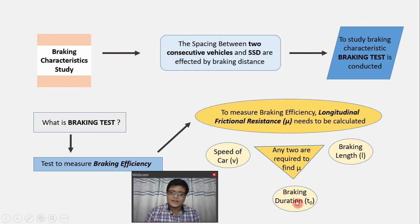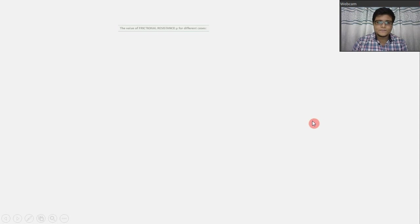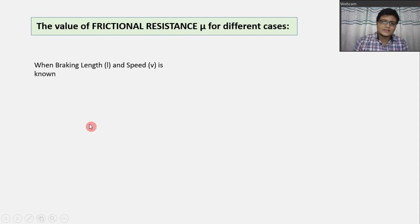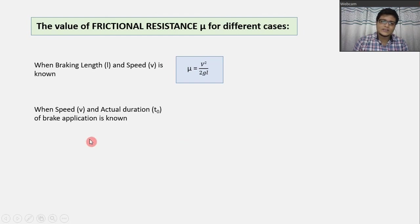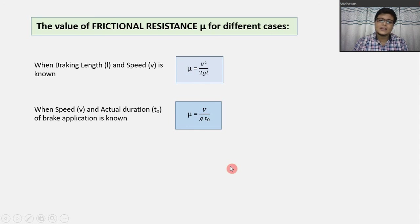If we have the speed of the car and braking duration, then we can find the longitudinal frictional resistance. If we have the speed of the car and braking length, then also we can find the longitudinal frictional resistance. The formula is: Mu equals V squared divided by 2GL, where V is the speed of the car, G is the acceleration due to gravity, and L is the braking length. Similarly, if we have the speed and actual duration of braking, the friction resistance mu value is V divided by G times T-naught, where T-naught is the actual duration of brake application.